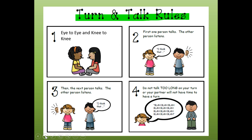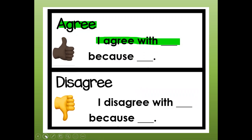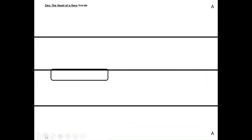A reminder about our turn and talk rules. If you have a partner at home: eye to eye, knee to knee. First one person talks, the other listens. Then the next person talks and the other listens. I may not be able to hear you, but say your answers out loud and don't talk too long or your partner won't have time for a turn. You may agree and say 'I agree with you because,' or disagree and say 'I disagree with you because,' and tell me why.